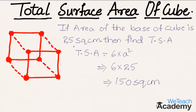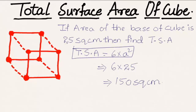To conclude, the total surface area of a cube is given by the formula 6a² square units. Hope you understood the concept. Do like and subscribe to vdchacademy.com. Thanks for watching — have a nice day!